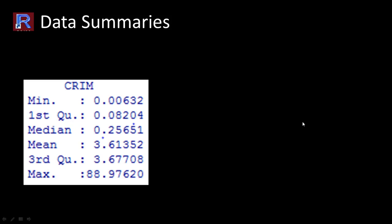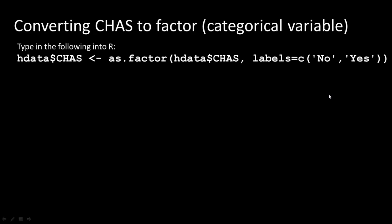Let's also look at how to convert the variable 'chas' into a categorical variable. Right now it's a numerical variable and R is treating it as a number. But since it's actually a categorical variable, we want R to know that. R refers to categorical variables as factors. One way to do this in R is to type a command like: hdata$chas <- as.factor(hdata$chas, labels=c('no','yes')). However, I don't recommend typing it in because I'll shortly show you a better way.